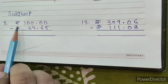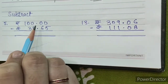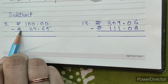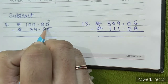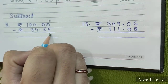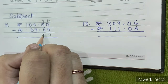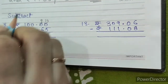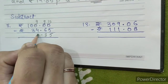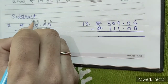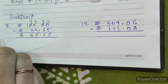Question number 7: subtract rupees 100.00 minus rupees 34.65. So 0 will become 10, 10 minus 5 is 5, it will become 9, 9 minus 5 is 5, it will become 9, 9 minus 6 is 3, 9 minus 4 is 5, 9 minus 3 is 6.